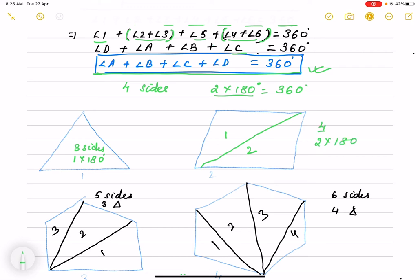4 sides means when you are multiplying, we are multiplying 180 with 2 less. 5 sides, 5 sides and I can divide it into 3 triangles. And angle sum will be 3 times 180 degrees.